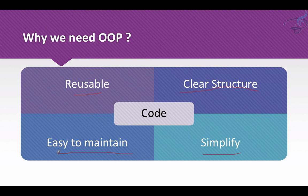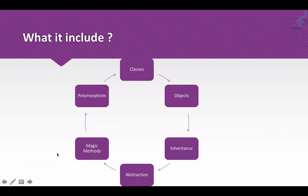These things are extremely important when you are creating a project because every project can be scaled up and you have to add functionality to your code. If your code is not easy to maintain or reusable, you will have a hard time adding new functionality. Object oriented programming includes classes, objects as instances, inheritance, abstraction, magic methods, polymorphism, and much more — all of which will be covered.